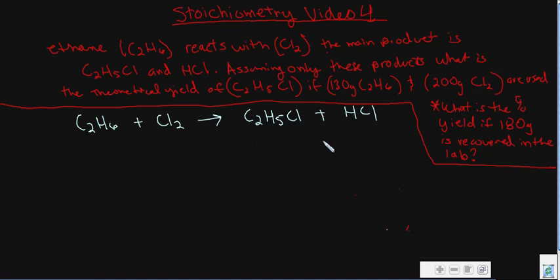So the reactants we have: C2H6 plus chlorine gas turns into C2H5Cl plus HCl. Looking at this to balance it, it's kind of nice because you realize that you have two carbon, two carbon, six hydrogens, five plus one is six hydrogens, and two chlorine, one plus one is two chlorine. So this is balanced and we don't have to do anything else.